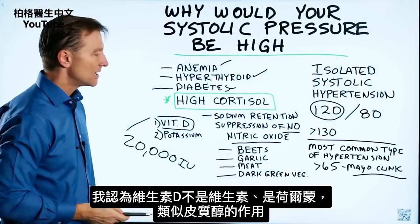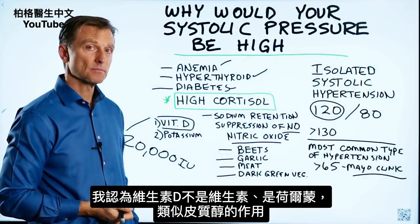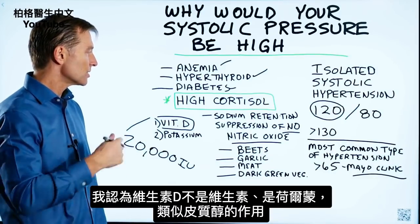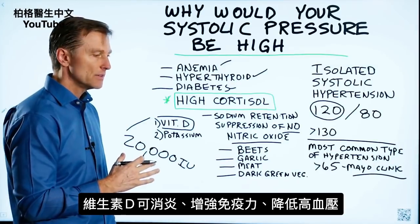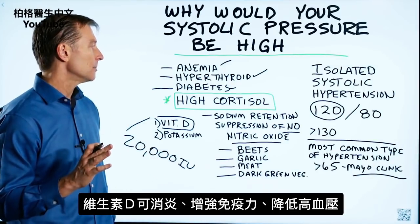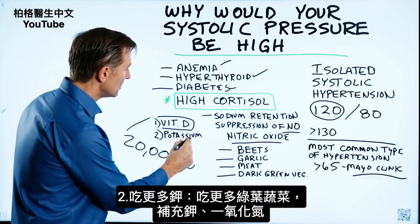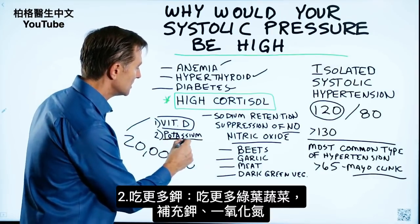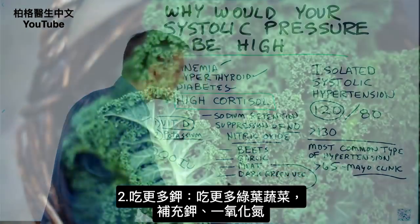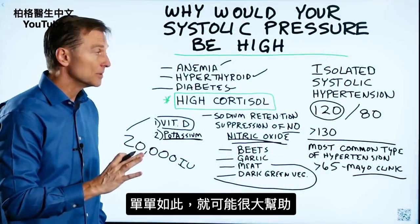The reason for that is that vitamin D is not really a vitamin — it's a hormone that acts like cortisol in the body, to a certain extent. It gets rid of inflammation and is really helpful in autoimmune conditions, and definitely helpful in hypertension. The other thing I would recommend is start taking potassium and consuming more leafy greens to get more potassium and nitric oxide. That alone might greatly help you.